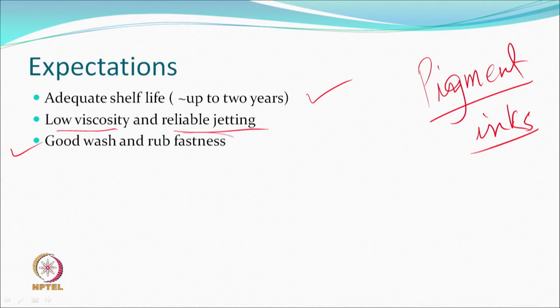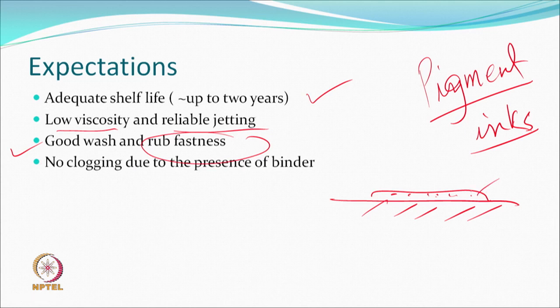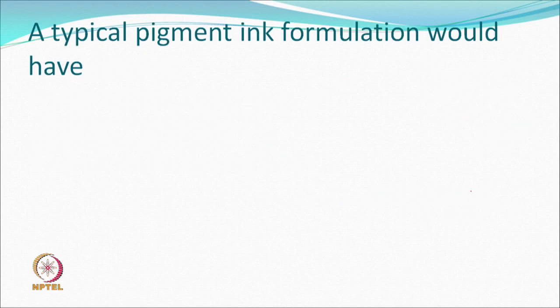Rub fastness is important because textiles have a film holding the pigment — if the film breaks during wet or dry rubbing, problems arise. Normally, people prefer the binder to be inside the ink itself. Since binders are film-forming substances, they may cause gelling. If the binder is not in the ink, it must be applied to the whole fabric before or after printing, which is less desirable.